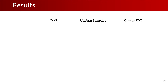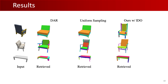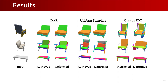Now we show some qualitative results. Given these input images, here are the retrieved models of the different methods and the corresponding deformed models. Notice that our approach achieves the best results, as shown by the thickness of the leg of the chair, the shape of the back, and the shape of the legs of the table.